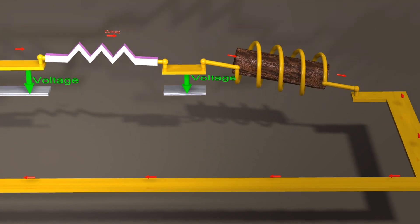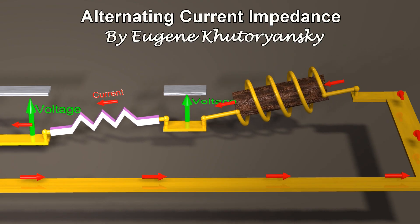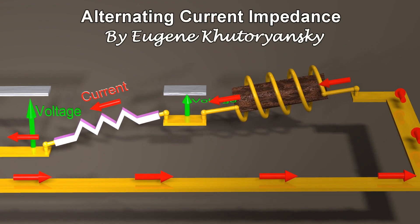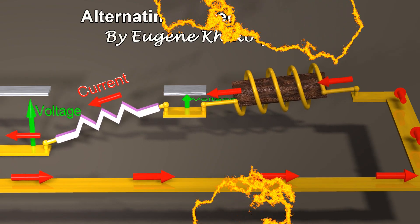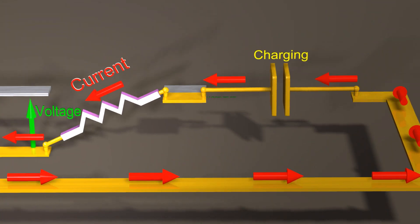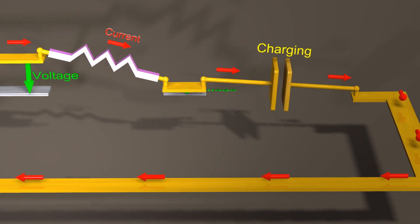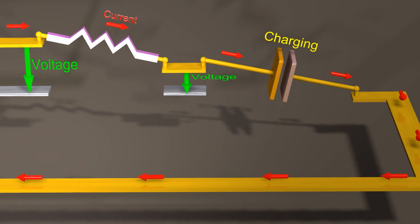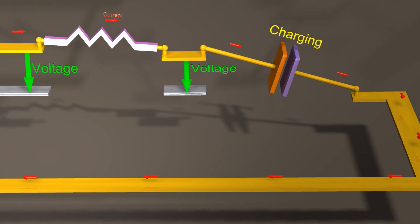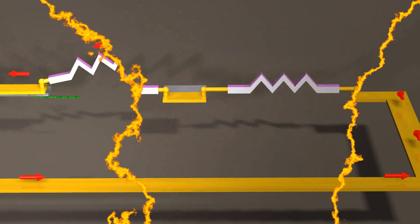If we apply an AC voltage, the frequency of the voltage affects the amount of current that will flow. Inductors, capacitors, and resistors all react differently to AC voltage. But in all three cases, the frequency of the AC current will be exactly equal to the frequency of the voltage.